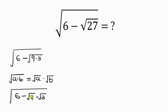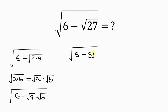Now we know that the square root of 9 is 3. So this will be the square root of 6 minus 3, and 3 times the square root of 3 is 3 root 3.